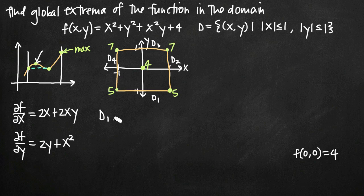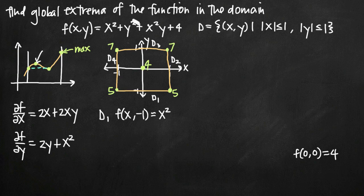Along d sub 1, the value of y is always negative 1 — this is essentially the line y equals negative 1. I replace y in the original function with negative 1: f(x, -1) gives x squared plus 1 minus x squared plus 4. The x squared terms cancel and the equation becomes just 1 plus 4, or 5. Because I get a constant, the value all along the line segment d sub 1 is equal to 5.